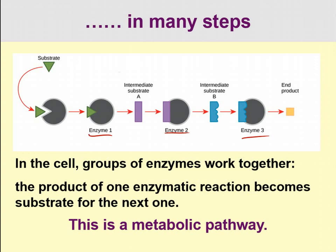In a metabolic pathway, the substrate of the first enzyme — a green triangle — is converted by enzyme 1 into a product, the purple rectangle. The purple rectangle is then the substrate for enzyme 2, which produces a blue object, which is the substrate for enzyme 3, producing the final orange-yellow square. This is a metabolic pathway because the product of one enzyme is the substrate for the next, and this is how the metabolic processes in our body that generate energy work.